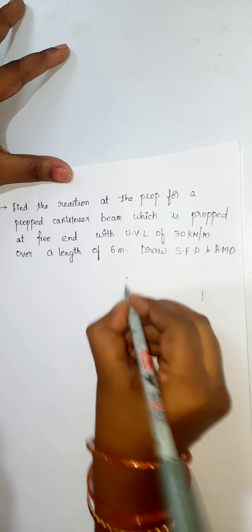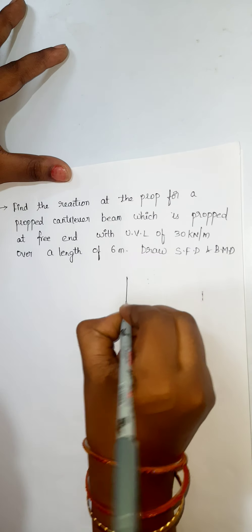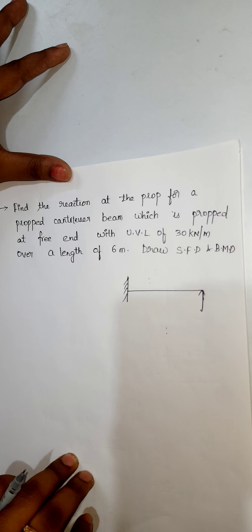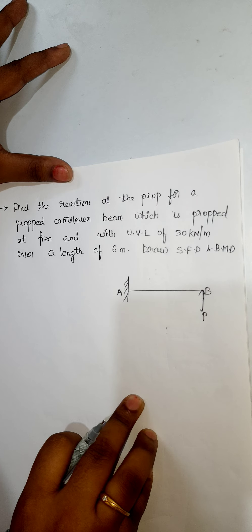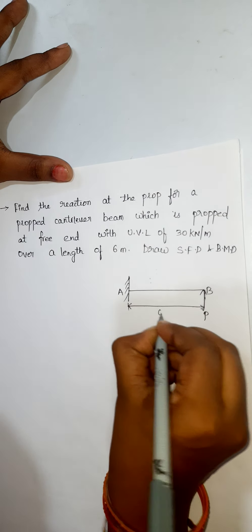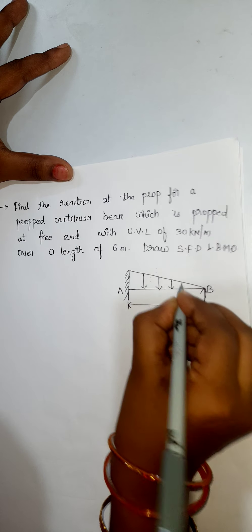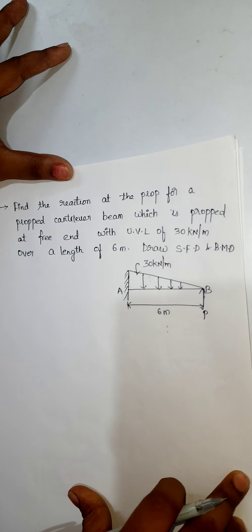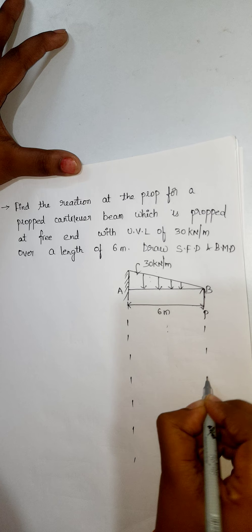This is my propped cantilever beam. I have drawn it. The free end is propped. I am naming it as A and B, with UVL of 30 kN per meter over a length of 6 meters. Now, I should calculate the propped reaction.